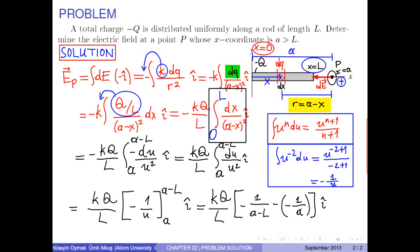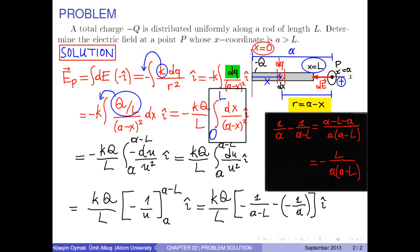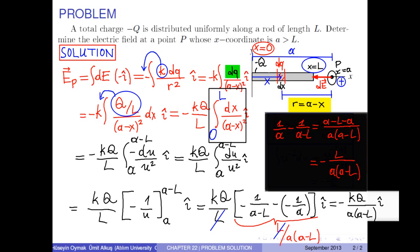The last term is calculated as negative L over A times (A minus L). As a result, we obtain the electric field at point P as negative k times Q over (A times (A minus L)), î-hat.